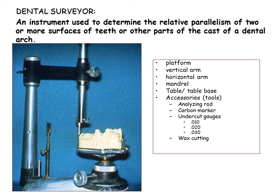9. The mandrel on the surveyor is retained by friction within a fixed bearing. 10. The shaft may be moved up or down within this bearing, but remains in any vertical position until again moved. 11. The shaft may be fixed in any vertical position desired by tightening a set screw.